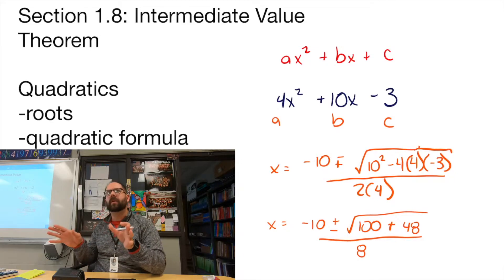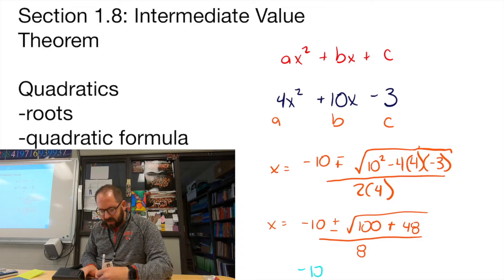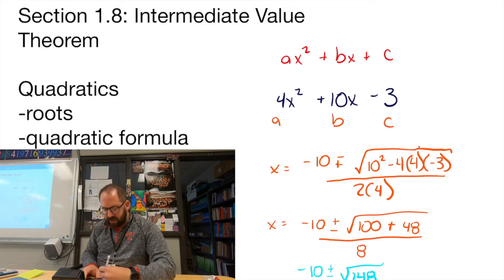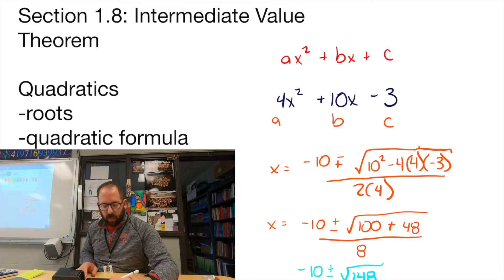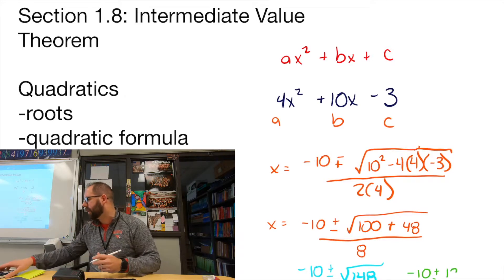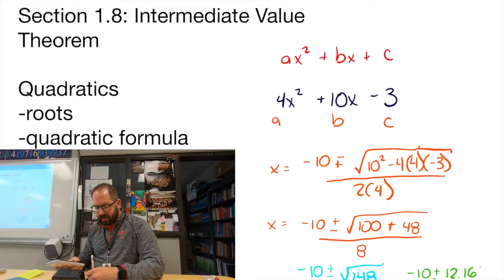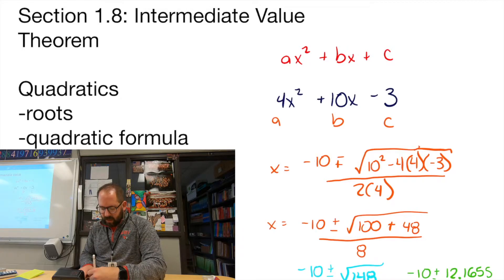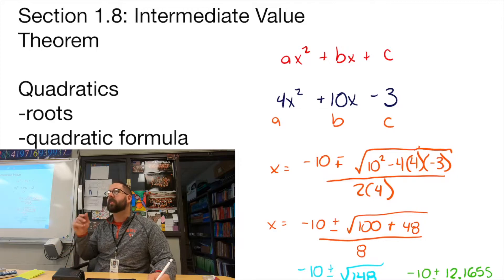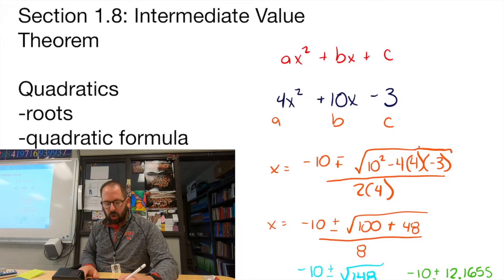Let's keep going — this is where you probably need a calculator. So we have negative 10 plus or minus the square root of 148, because that's 100 plus 48, all divided by 8. The square root of 148 is a decimal — that's what I was warning you about. We are going to get crazy numbers sometimes; you just have to trust your answer. The square root of 148 is about 12.1655. So I'm taking negative 10 plus 12.1655 divided by 8, which gives about 0.27, and negative 10 minus 12.1655 divided by 8 gives about negative 2.77. Those are my two roots.